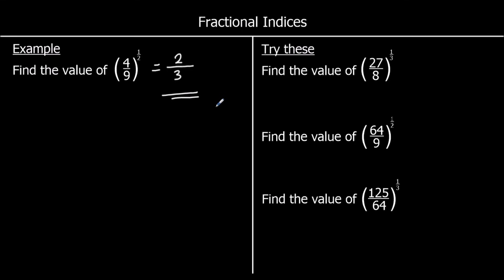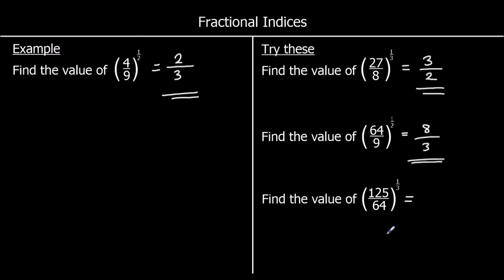Here are three questions to try: 27 over 8 to the power of a third — cube root the top and the bottom. Cube root of 27 is 3, cube root of 8 is 2, so we get 3 over 2. Second, 64 over 9 to the power of a half — square root the top and the bottom. Square root of 64 is 8, square root of 9 is 3, so we get 8 thirds. Finally, 125 over 64 to the power of one third — cube root of 125 is 5, cube root of 64 is 4, so we get 5 over 4.